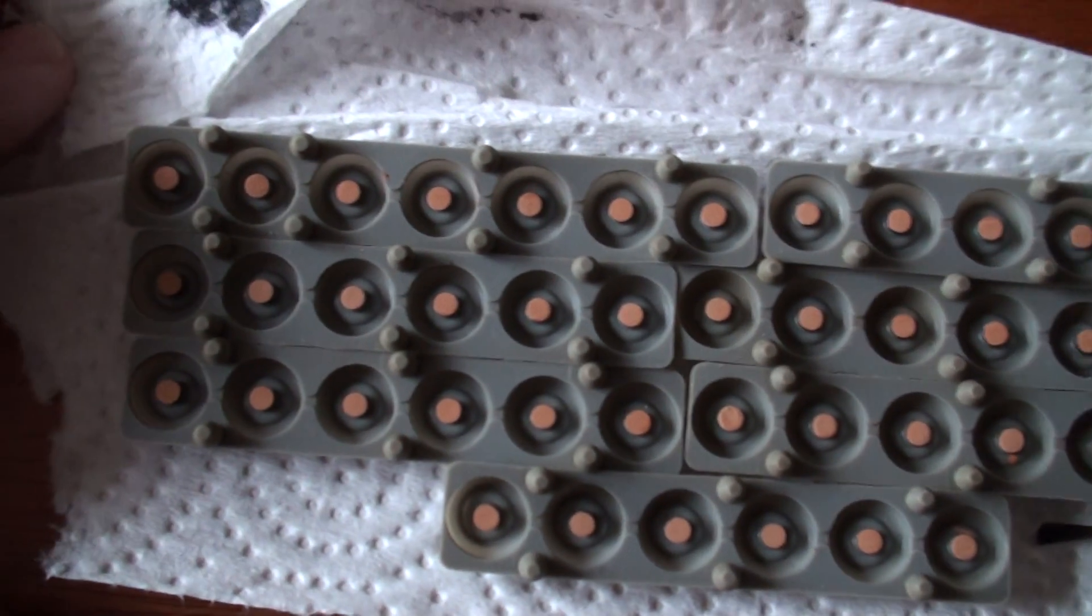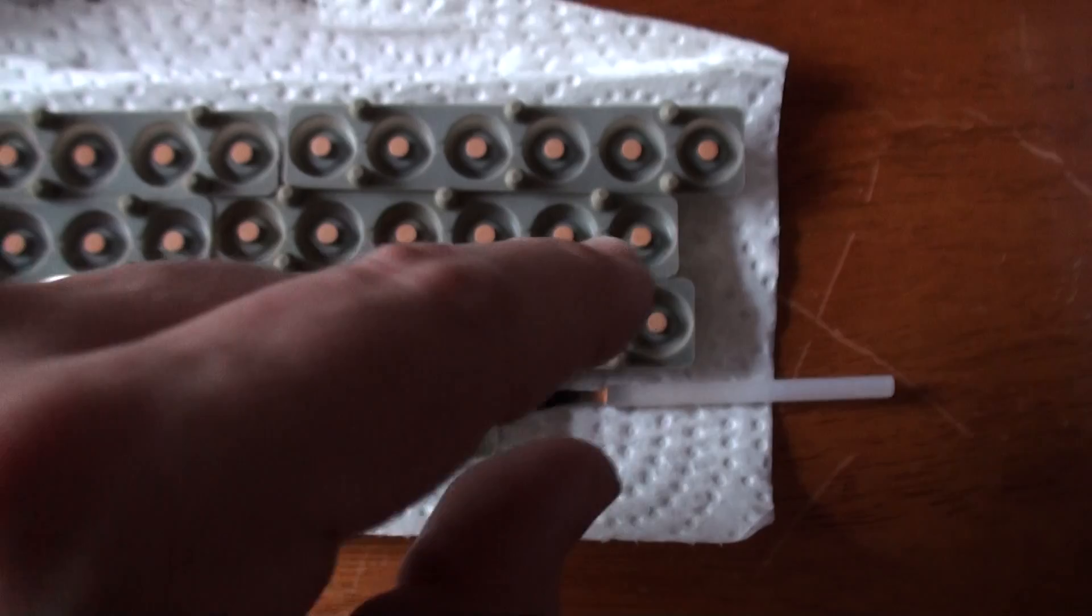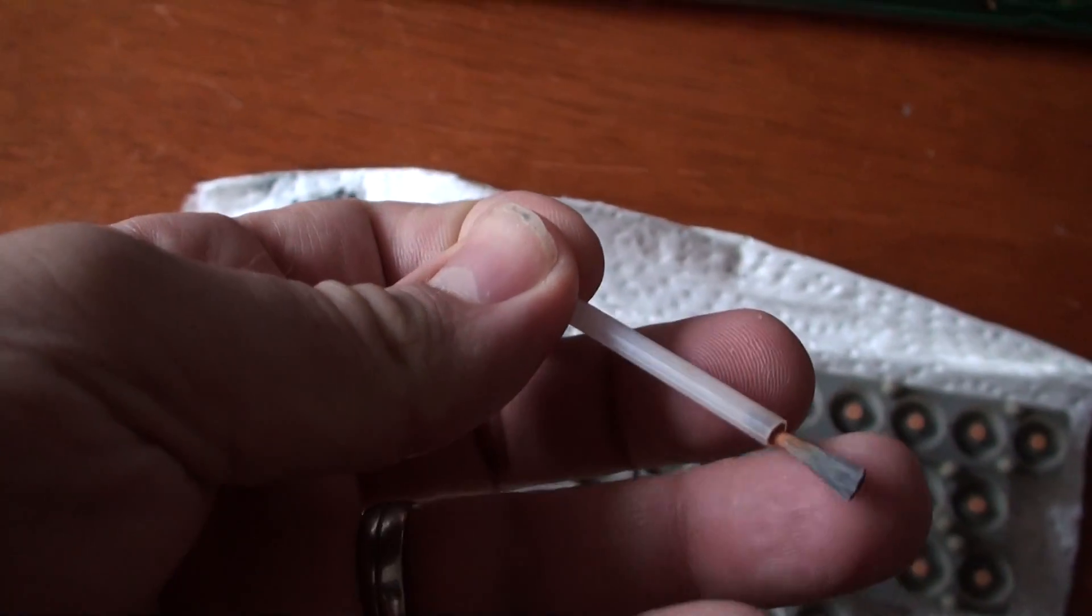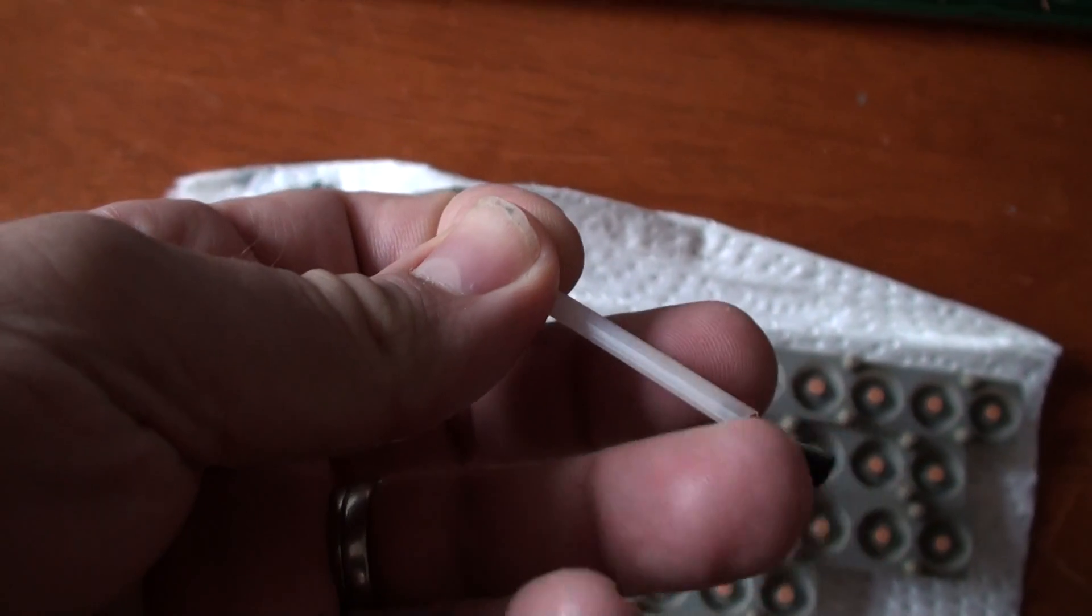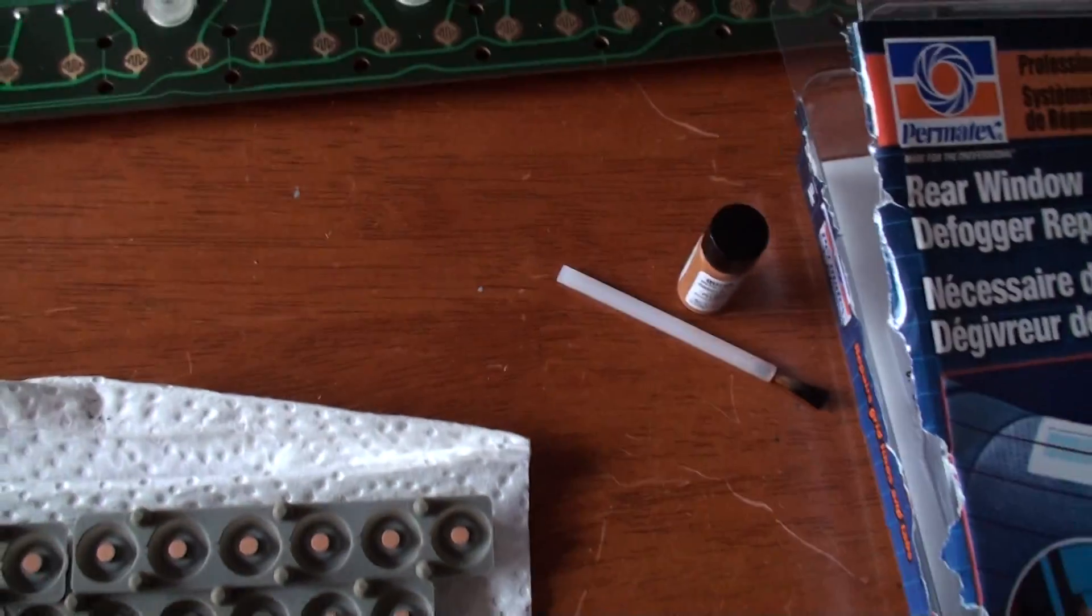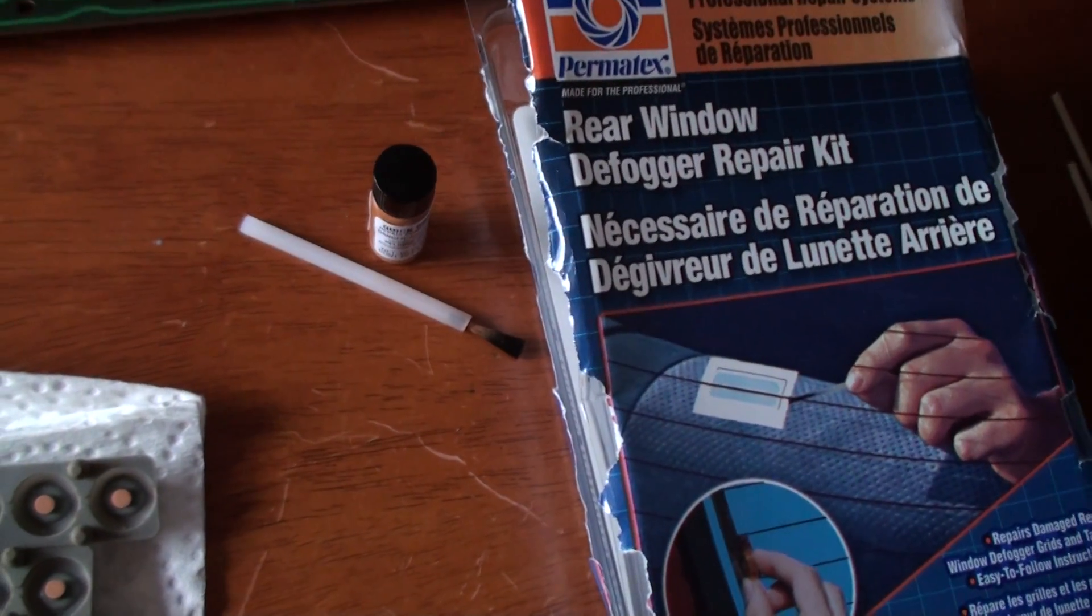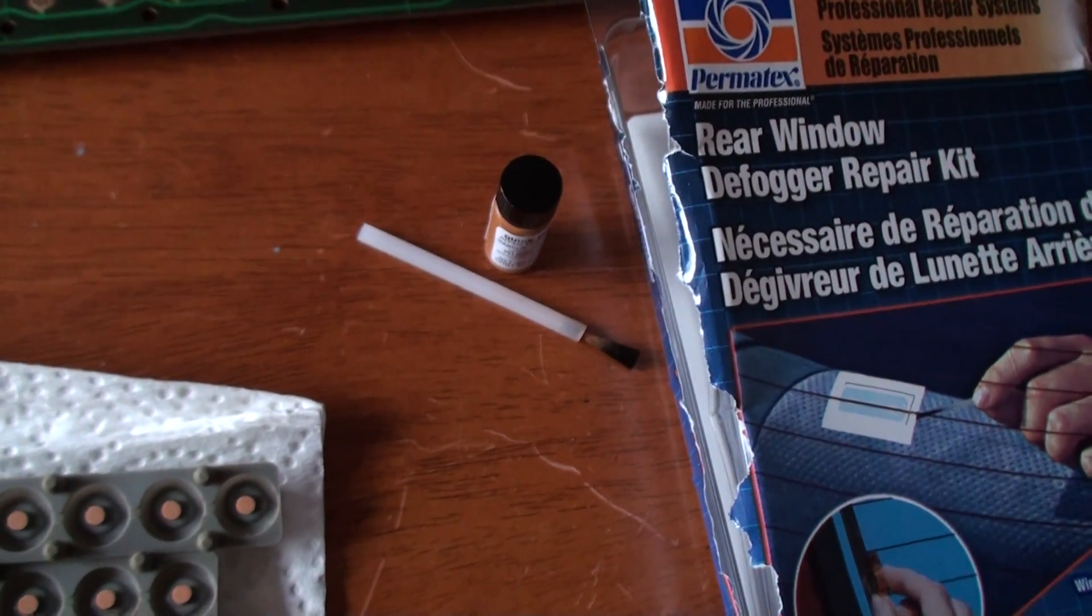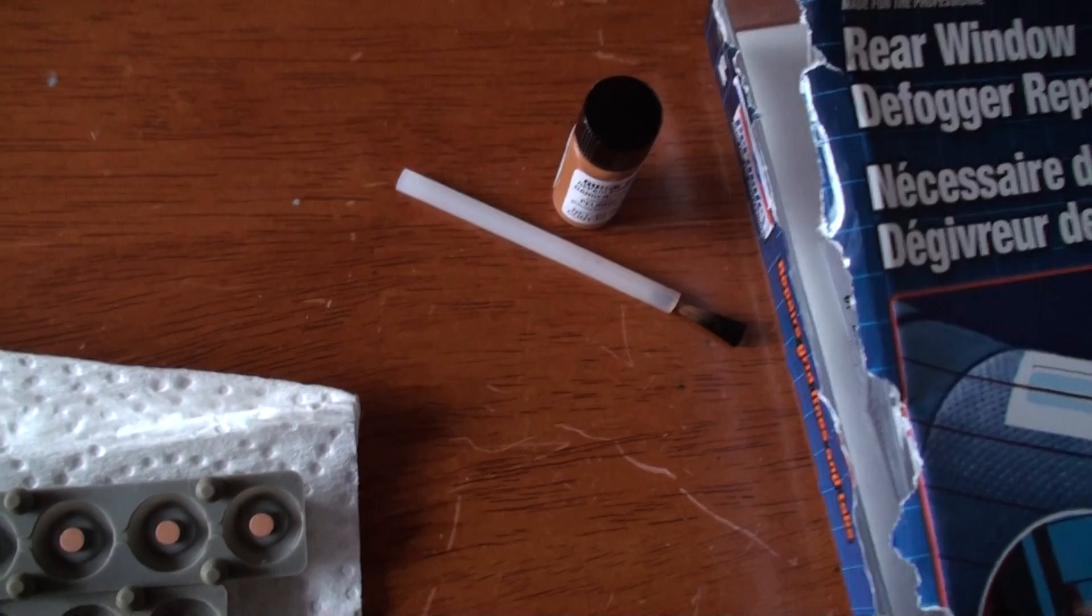Then here are the pads, and look at that—it comes with its own little brush. Just for the sake of making sure I wanted to be able to evaluate just the kit itself, I didn't use a fancy brush or anything like that. I just used the one included in the kit.